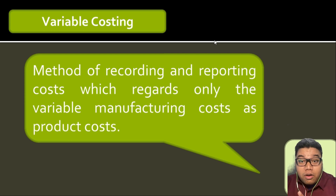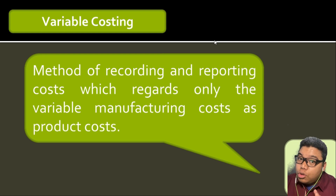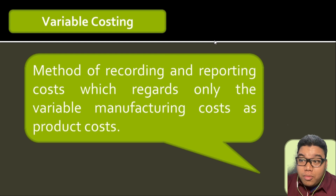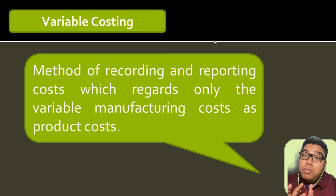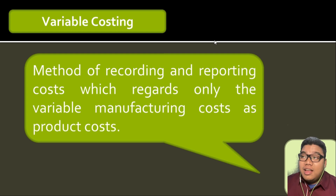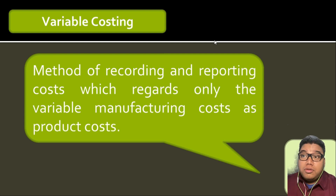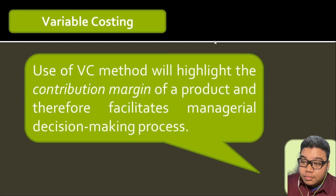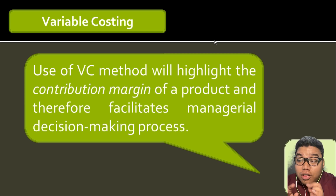As you may remember from your cost management courses, we group costs according to which product they pertain to and whether they are controllable or not. Here we will apply some of those concepts from the earlier module. Variable costing is highly helpful when analyzing costs and when determining whether or not to push through a decision on whether costs can be controlled by the department.